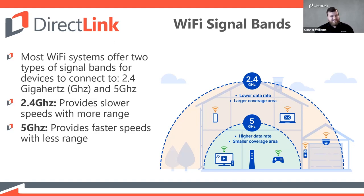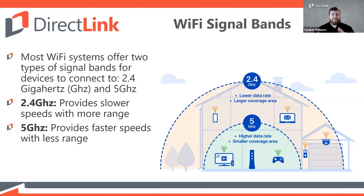You might be wondering how to change which frequency a device is connected to. With some Wi-Fi routers, this is a manual process where you'd have two different Wi-Fi SSIDs — your network name — one labeled 2.4 GHz and one labeled 5 GHz, showing up in the list of networks. But with our new routers at Direct Link, software built into them automatically assigns your devices to the most optimal network and re-evaluates periodically, moving devices between frequencies to ensure the best experience possible.